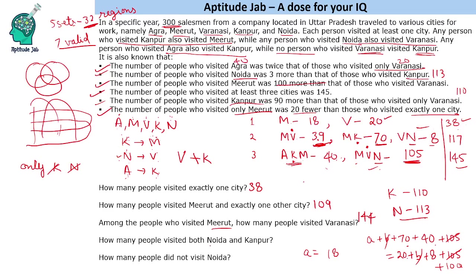How many people visited both Noida and Kanpur? Noida and Kanpur are not together anywhere in the valid combinations, because Noida must go with Varanasi, and Varanasi and Kanpur cannot be together. So the answer is zero. You could have answered this question without solving because Noida and Kanpur being together was never possible.